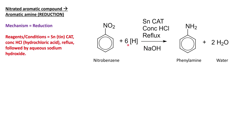You might wonder why we need 6H. First, we have to remove the two oxygens — in redox we always form water when removing oxygen, so we need at least four hydrogens to form the two water molecules. That accounts for four of the six. Looking at the product, the NH2 group has two hydrogens, so we need to add two more hydrogens onto the nitrogen. That gives us two hydrogens on the nitrogen and four hydrogens forming water — hence 6H in total.